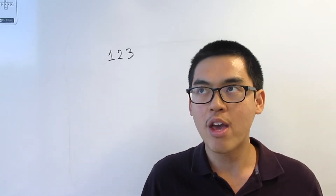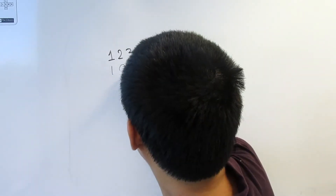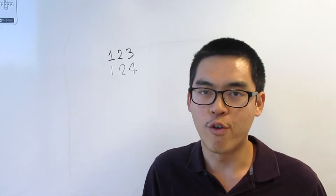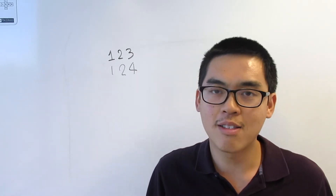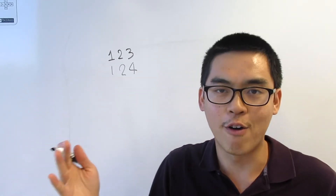So we have one, two, three. What are some other ways? Well, we can do one, two, four; one, two, five; one, two, six; and so on. Let me actually list everything out for you.